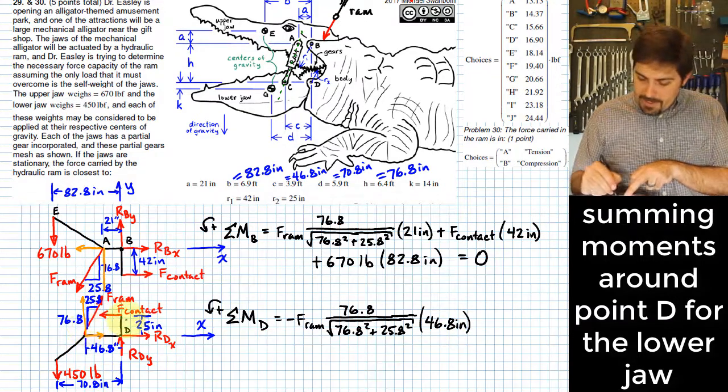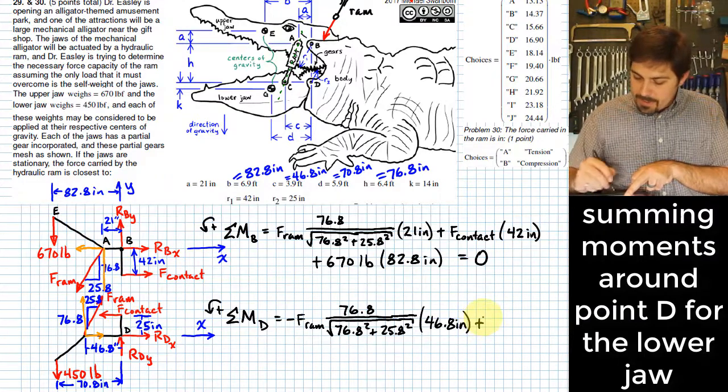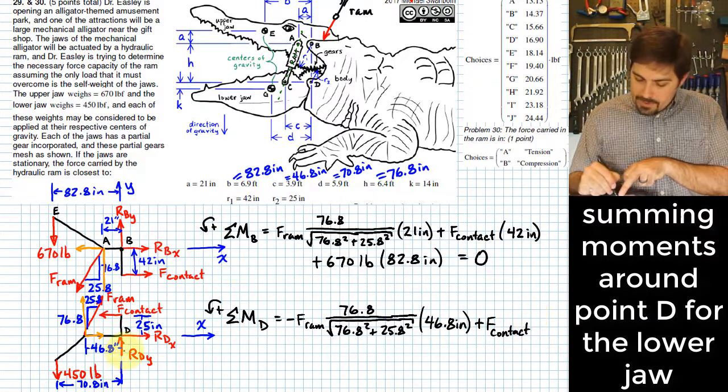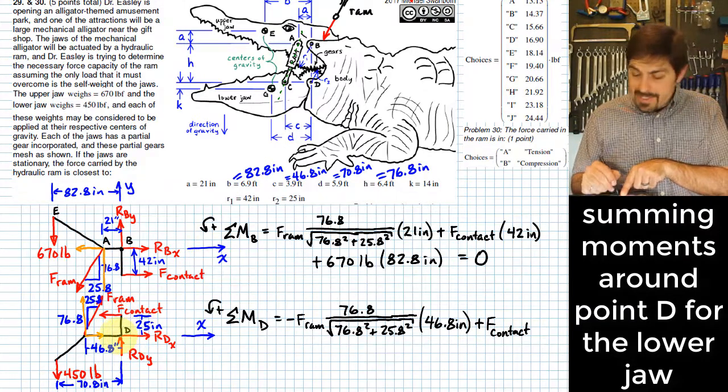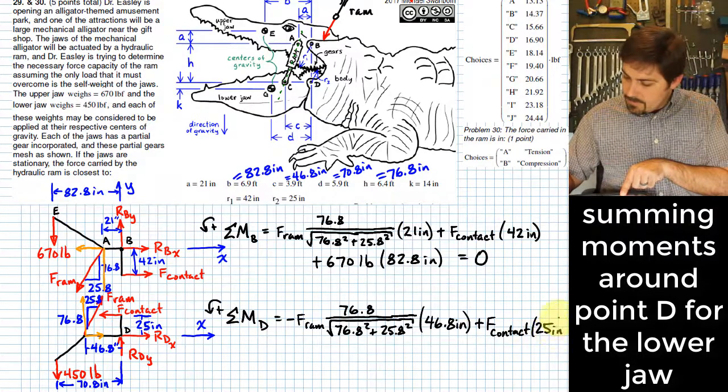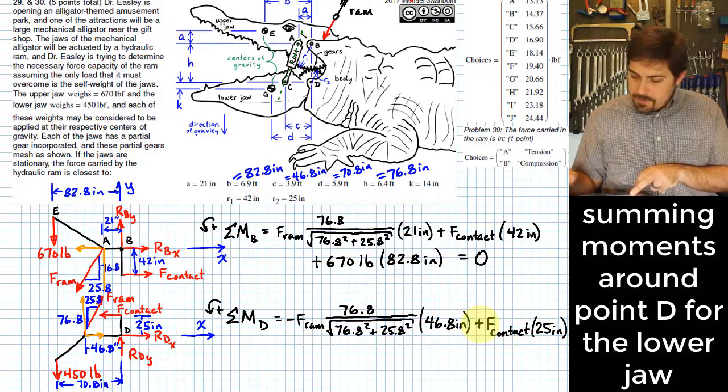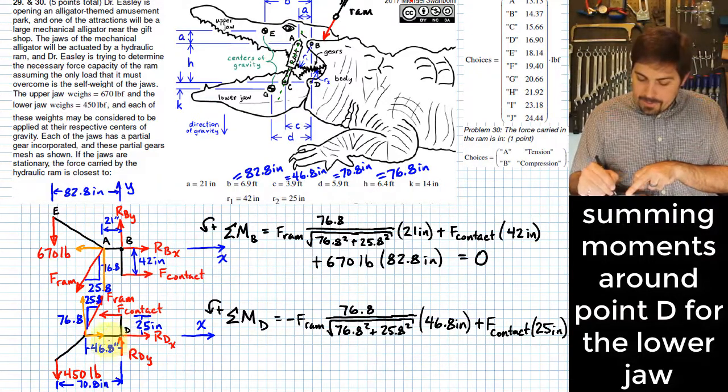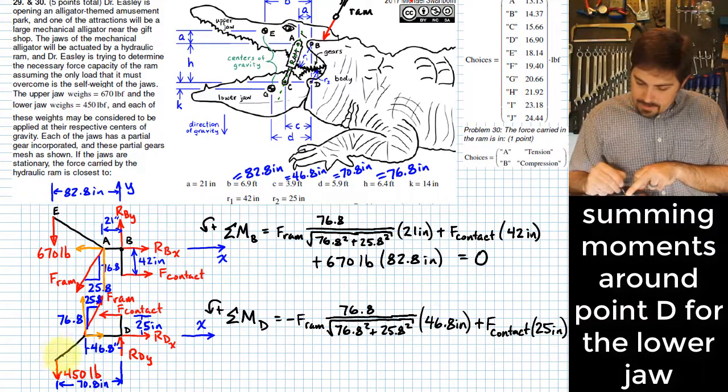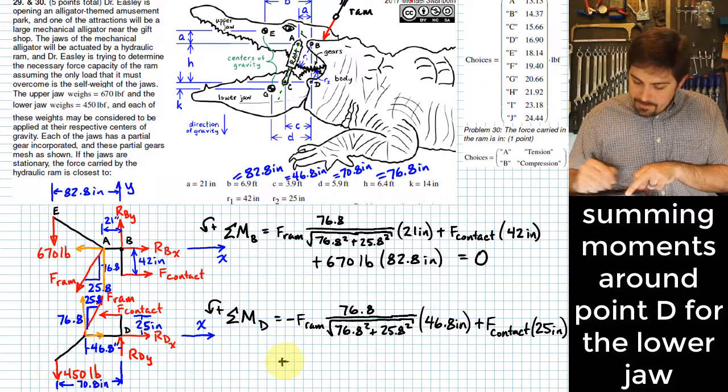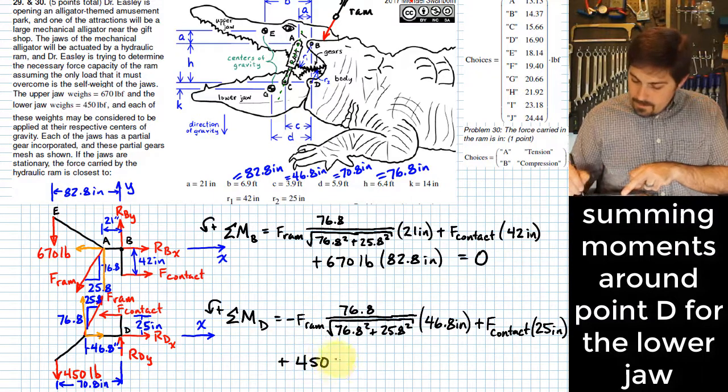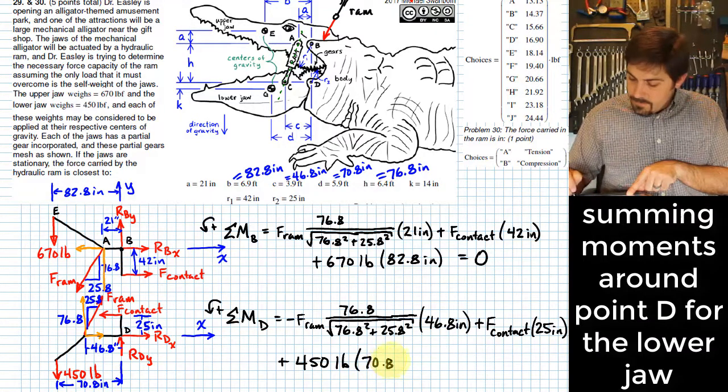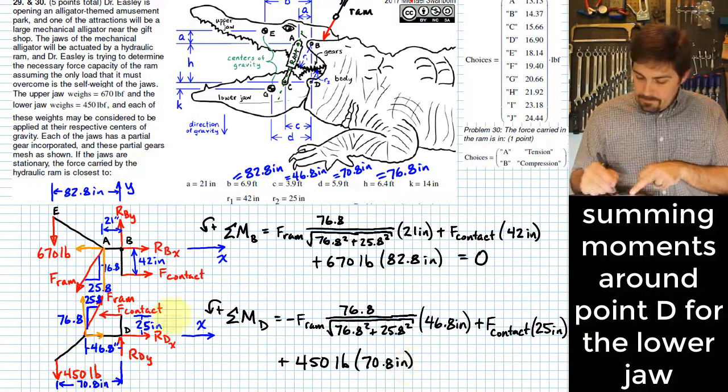Now, I need to take care of my F-contact force, which tends to rotate this counterclockwise. Counterclockwise is positive, how I'm summing these up. So I say plus F-contact times the line of action of F-contact is 25 inches away from point D. So I put 25 inches there. That takes care of those two forces, and now I need to figure out the effect of the 450-pound force. It'll tend to be a counterclockwise influence around D. That would be a positive 450 pounds times 70.8 inches counterclockwise around D.